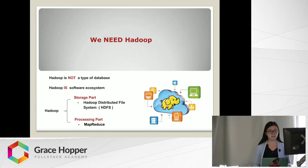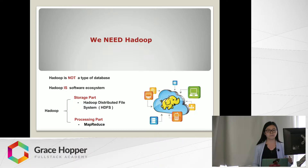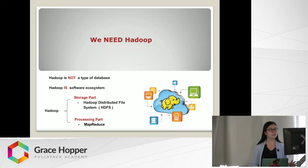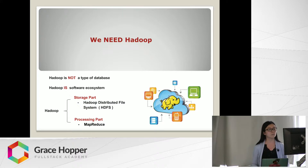That's why we need Hadoop. Hadoop is definitely not one of those traditional databases. It's actually a data software ecosystem that allows for massive parallel computing. Hadoop is an open-source software framework written in Java, and it has two important parts: one is the storage part, the Hadoop Distributed File System — HDFS — and the other is the processing part, which is called MapReduce.